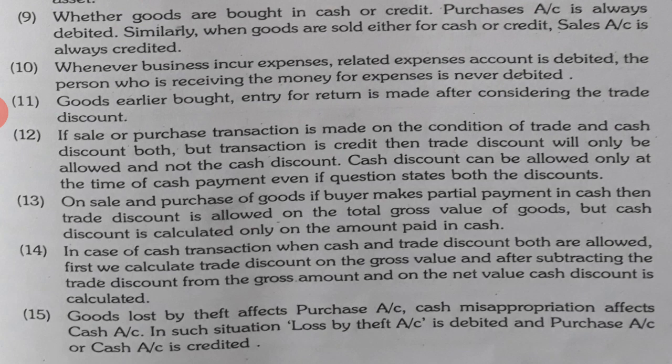Point eleven: if goods were previously purchased and entry for return is made, it is done after considering the trade discount. The return entry also excludes the trade discount — it is not counted.